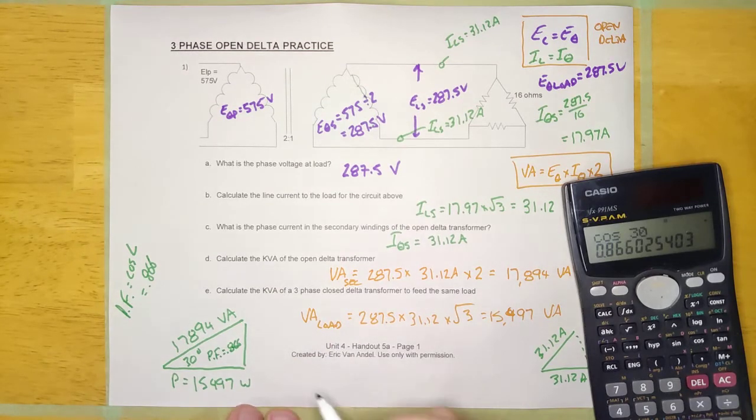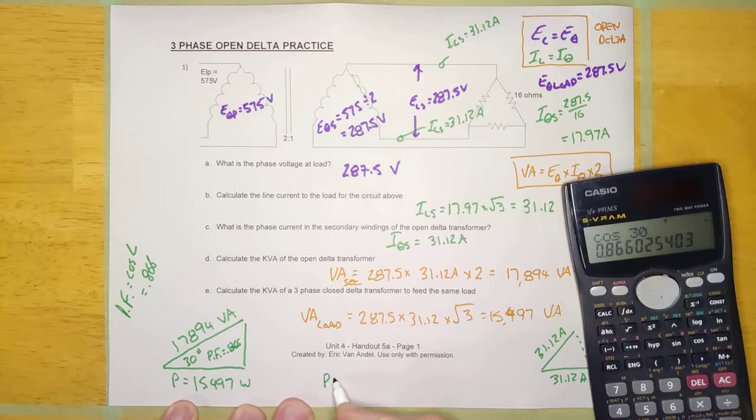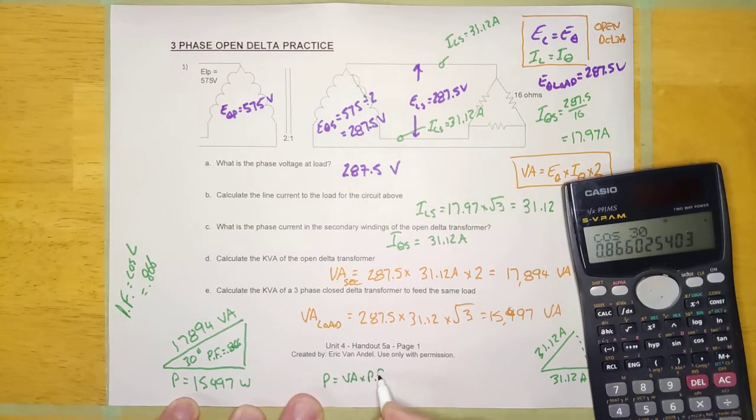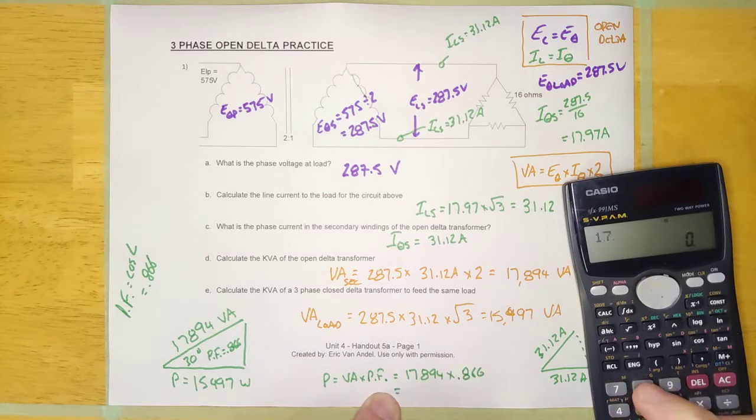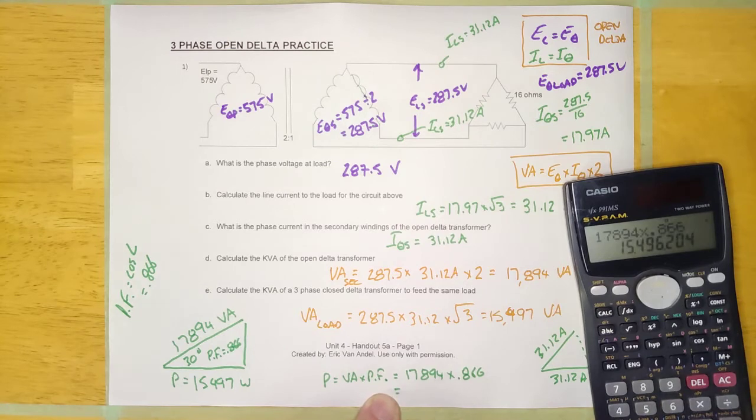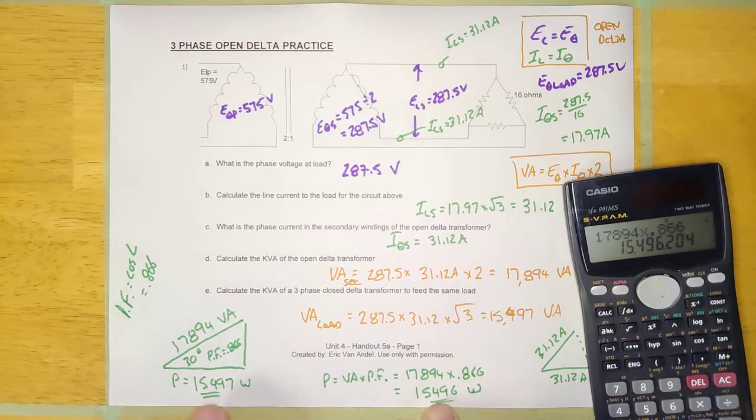Okay guys, and that's right here. And let's just see if all this works out, because the power in the circuit should be the VA times the power factor. And so the VA we said was 17,894 and the power factor we said was 0.866. And if I do that math guys, let's do it. 17,894 times 0.866, boom, 15,496 watts. Okay guys, yeah, they're the same.